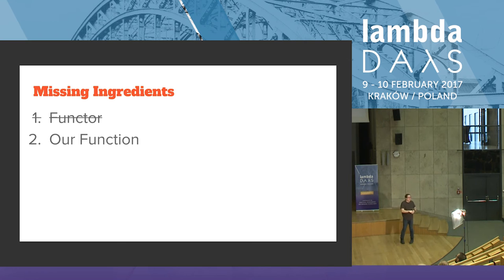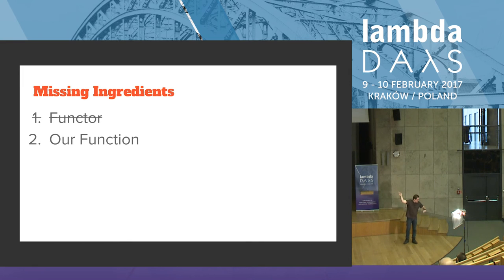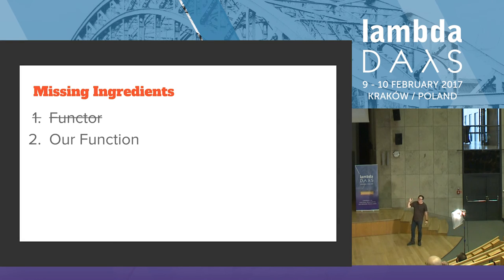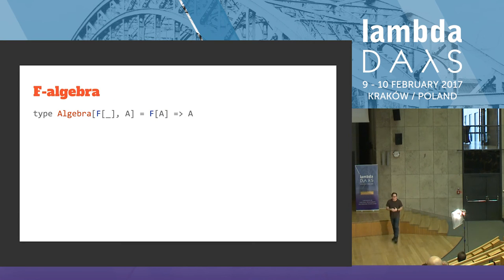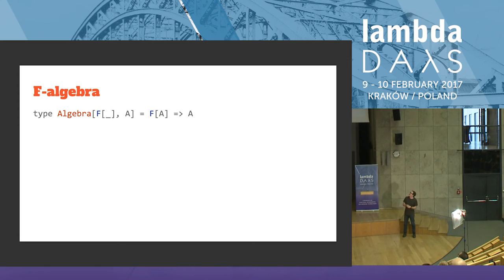The last bit — finally — is that function we hoped to implement half an hour ago. Before we do, it has a name: F-algebra. F-algebras are just functions — it's not the algebra Adam Warski was telling you about. An algebra of F for type A is simply a function from F(A) to A. Like expression of double to double.